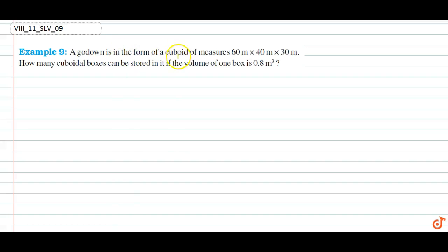A godown is in the form of a cuboid and measures 60 by 40 by 30 meters. How many cuboidal boxes can be stored in it if the volume of one box is 0.8 meter cube?